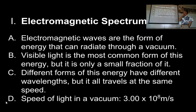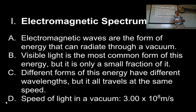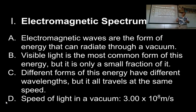They're called electromagnetic because the electric wave and the magnetic wave travel together. Visible light is the most common form of this energy, but it's just a small sliver of it. Radio waves, microwaves — these are all also parts of the electromagnetic spectrum. All of this energy travels through a vacuum at the same speed, but it has different wavelengths.